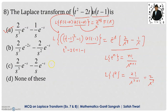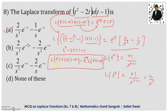There is another way I prefer: the formula L{f(t) · u(t − a)} = e^(−as) · L{f(t + a)}. The difference here is there is no need to convert the function into (t − a) form — we directly find the Laplace transform. We write e^(−as) for u(t − a), then replace t with t + a in f(t) and find its Laplace transform. In our case, u(t − 1) gives e^(−s), and we replace t with t + 1 in t² − 2t and find the Laplace transform of that function.